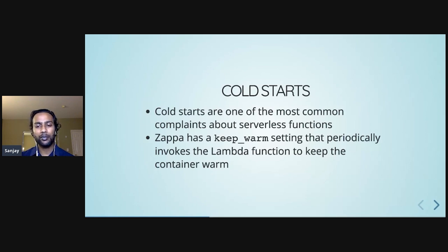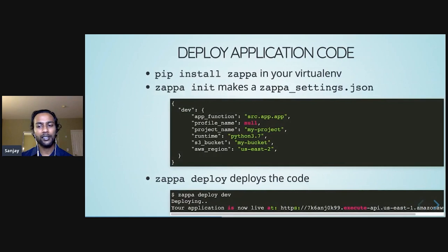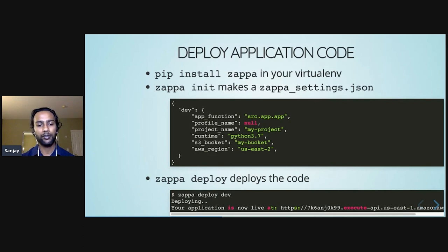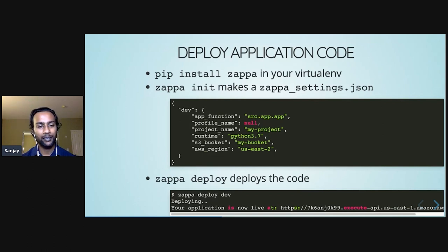Now that we know a little bit about Zappa, let's jump into how to use it. The most common use case is deploying your application code, which requires just a couple steps. First, you run pip install Zappa in your virtual environment. Then you run zappa init, which makes a zappa_settings.json file for you. Finally, you run zappa deploy, and within about a minute, your back-end code will be live on the internet running on AWS Lambda.